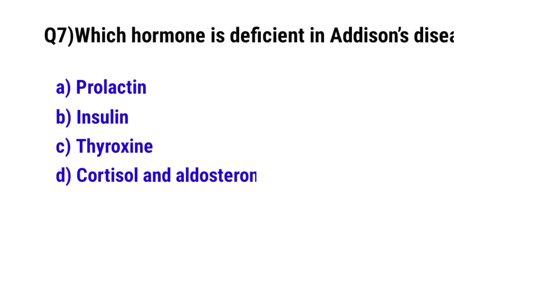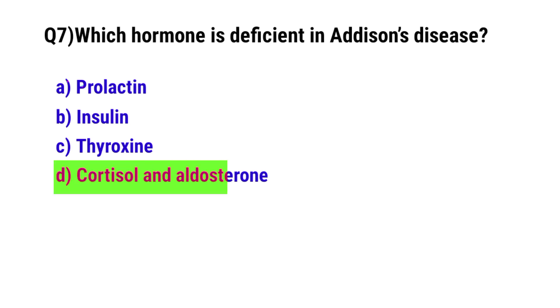Question No. 7. The hormone which is deficient in Addison's disease? The correct option is D: Cortisol and Aldosterone.